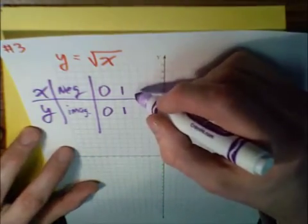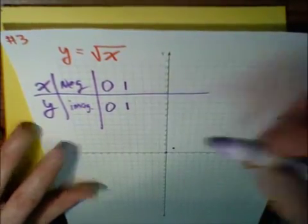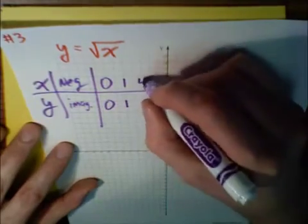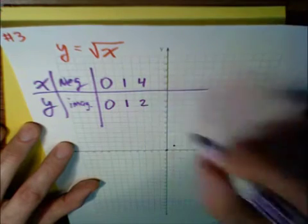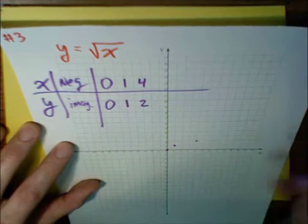Now, I don't like to put in 2. You could put in 2, but you need to use a calculator. Square root of 2, I don't know what that is. Square root of 3, I don't know what that is either. I'm going to put in a perfect square, because I know what the square root of 4 is. The square root of 4 is 2. So the next point that I can figure out is 4, 2.